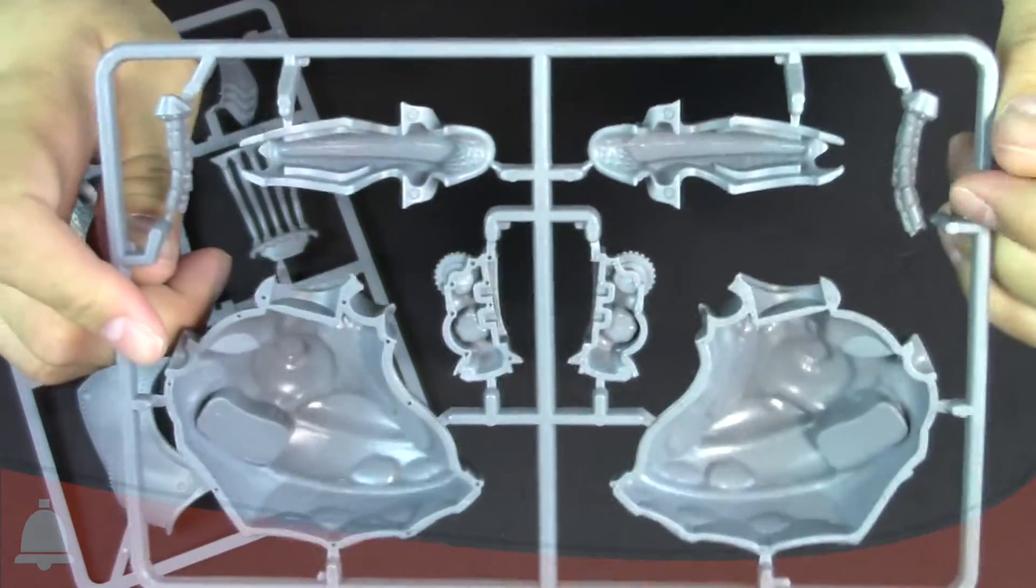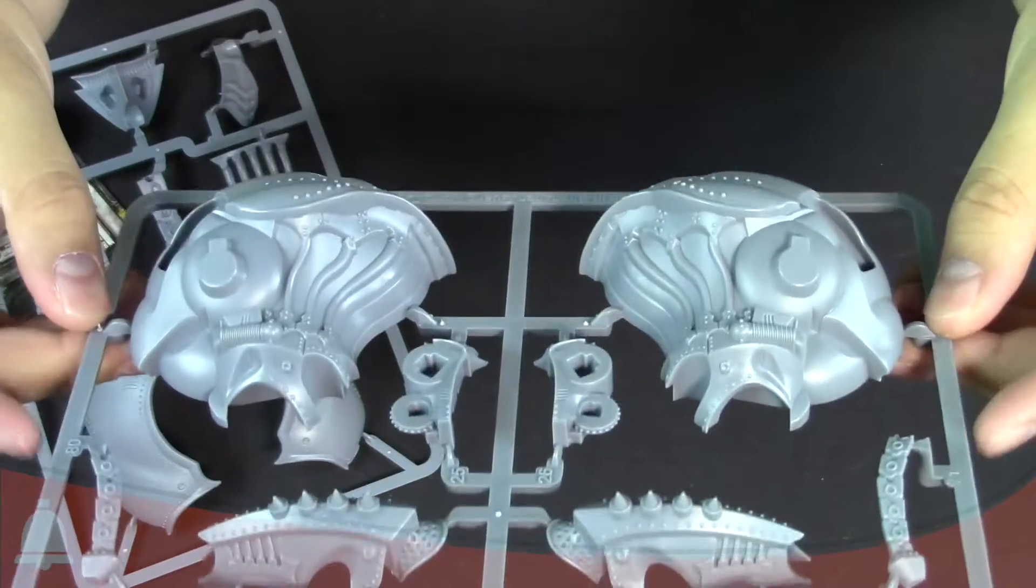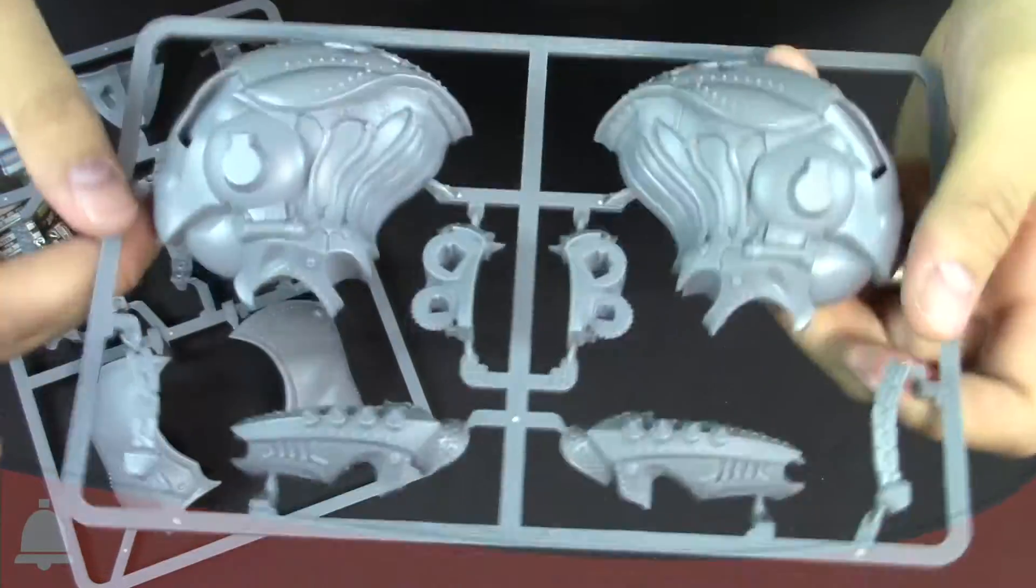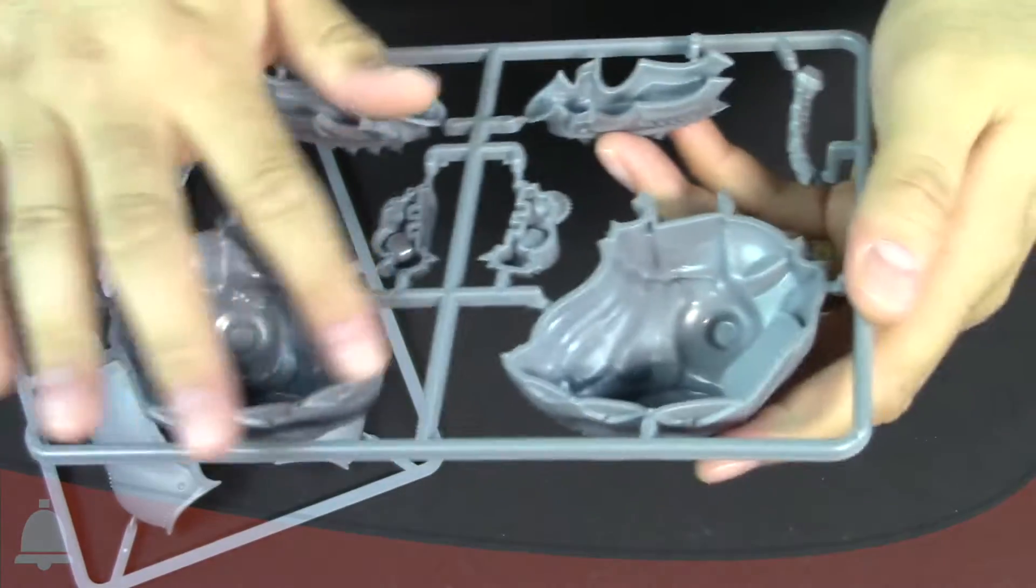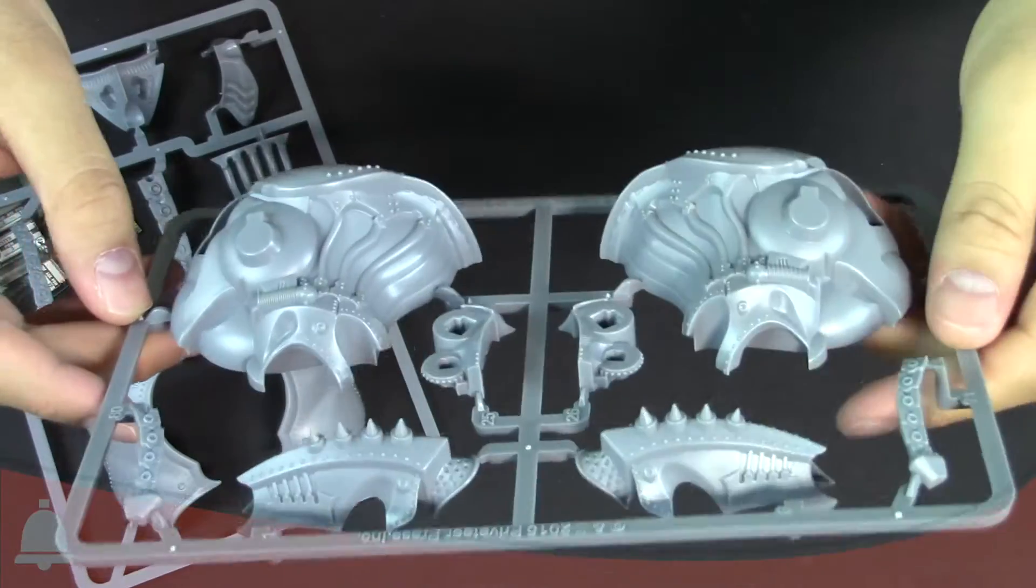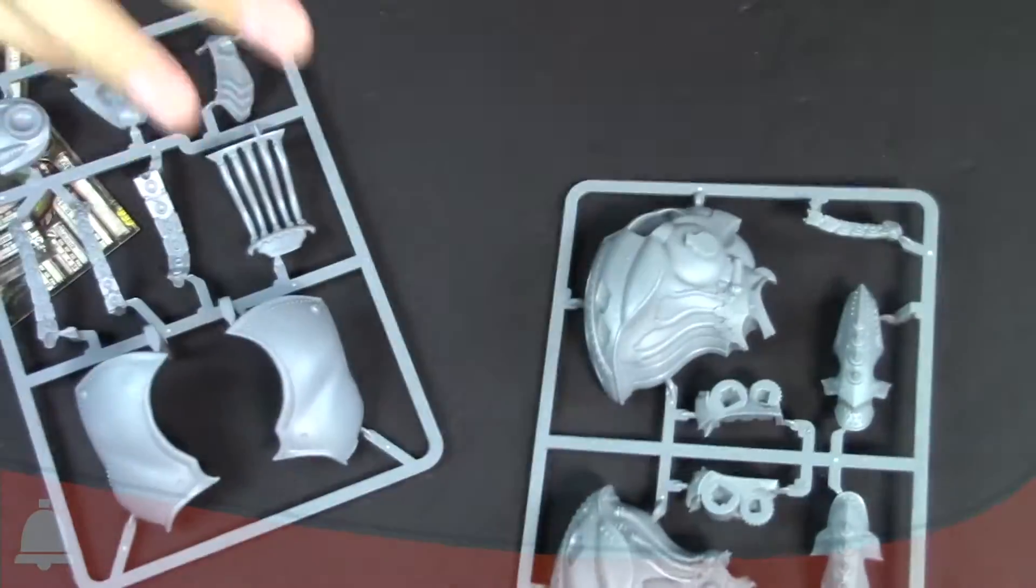But now we have hollow plastic, which is awesome. So again, I would definitely recommend using some plastic glue, put this bad boy together. Once you do that, once it fuses, because it's plastic glue it's actually melting the plastic. And then when it solidifies, it's actually reforming that bond into basically a seamless bond.